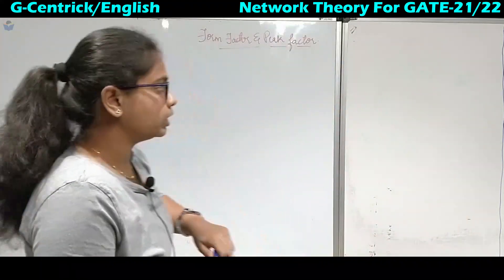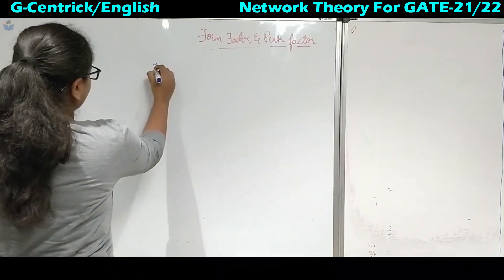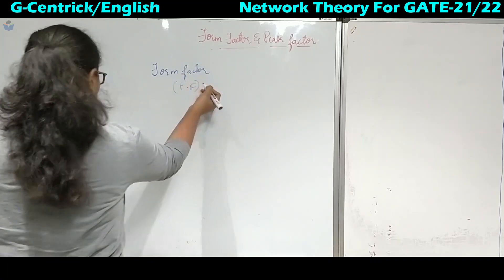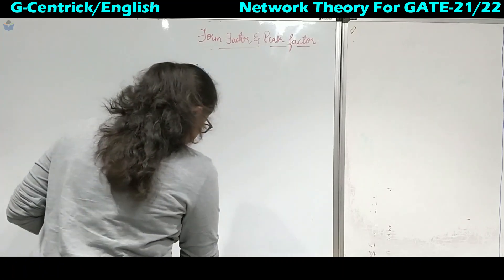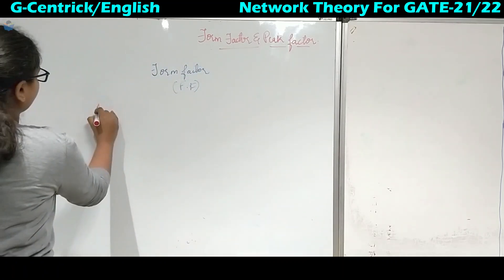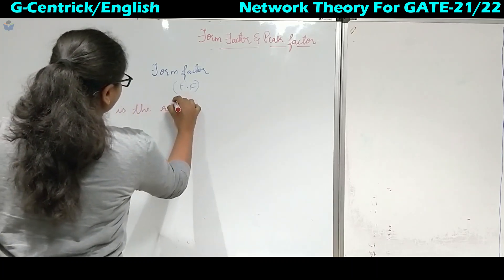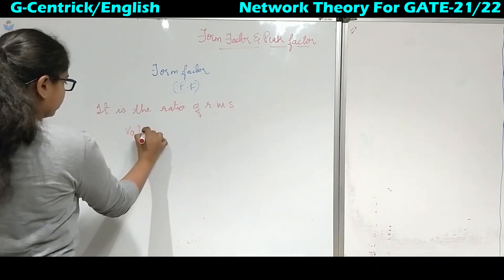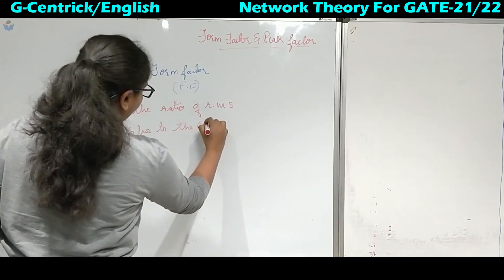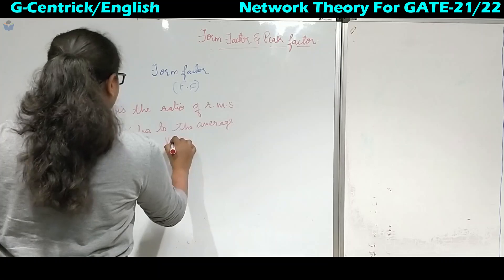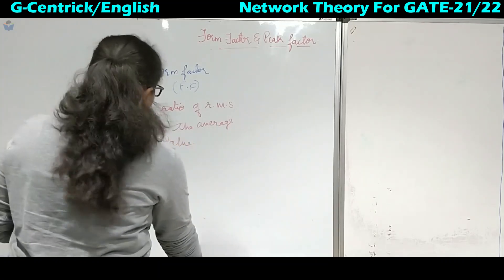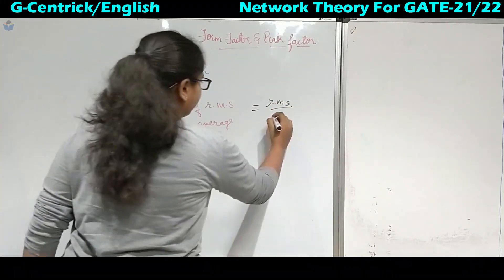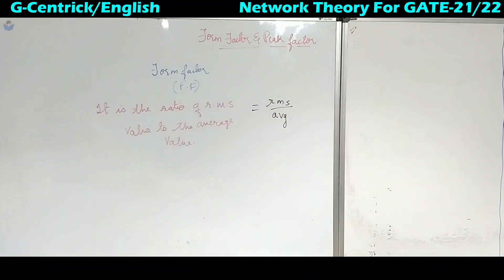So what is the definition of the form factor? It is denoted by F.F. Basically, it is the ratio of the RMS value to the average value. This is the definition of the form factor.